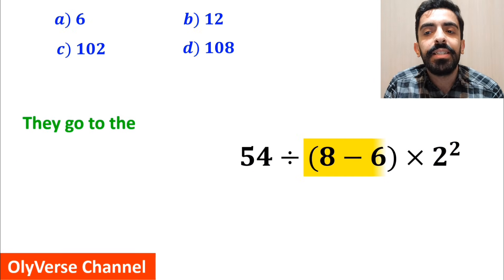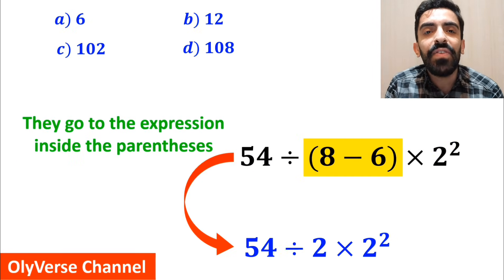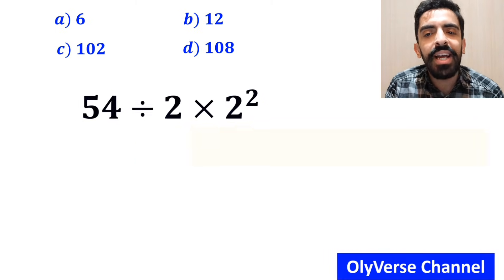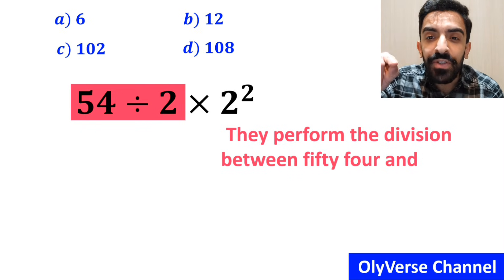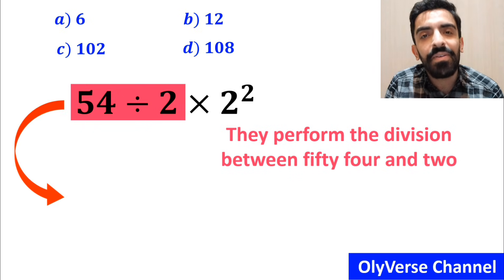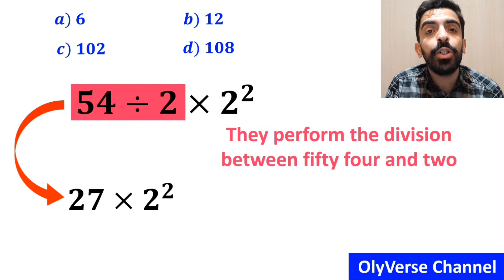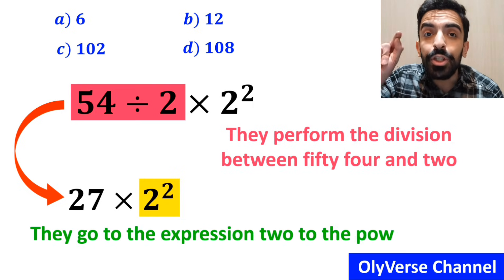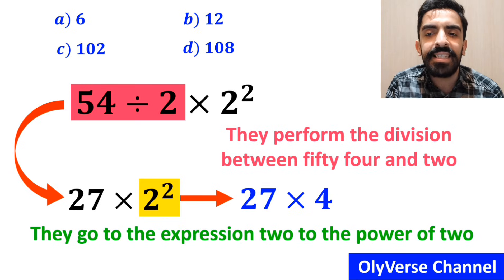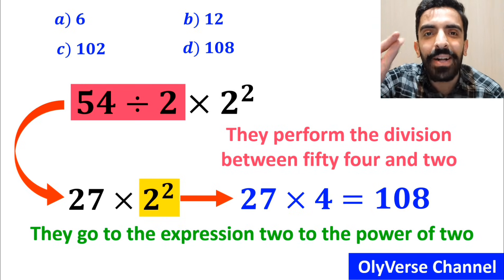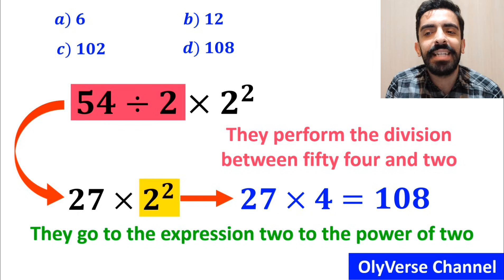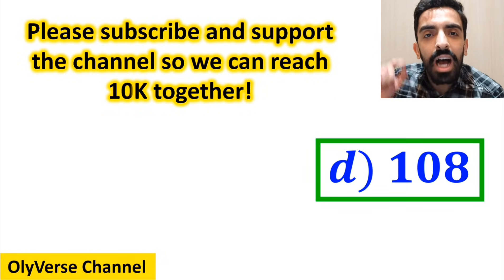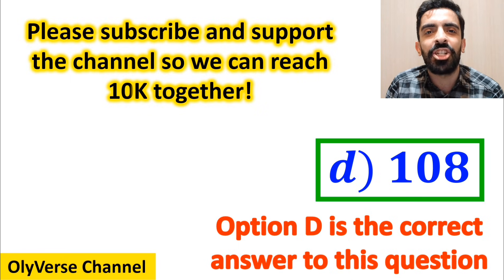In the next step they go to the expression inside the parenthesis and simplify to 54 divided by 2, times 2 to the power of 2. Then they perform the division between 54 and 2 and write 27 times 2 to the power of 2. At the final step they simplify 2 to the power of 2, getting 27 multiplied by 4, which gives them the answer 108. Then they quickly say that option D is the correct answer.